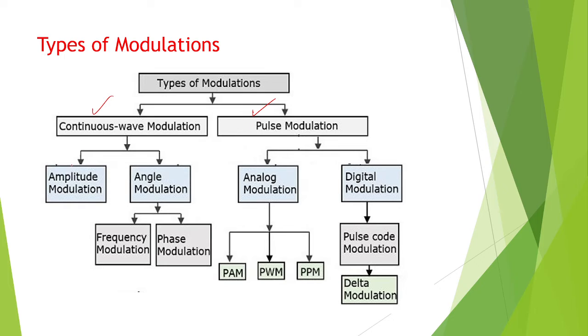So Continuous Wave Modulation includes Amplitude Modulation, Frequency Modulation, and Phase Modulation. Coming to the Pulse Modulation, we have Analog Modulation.